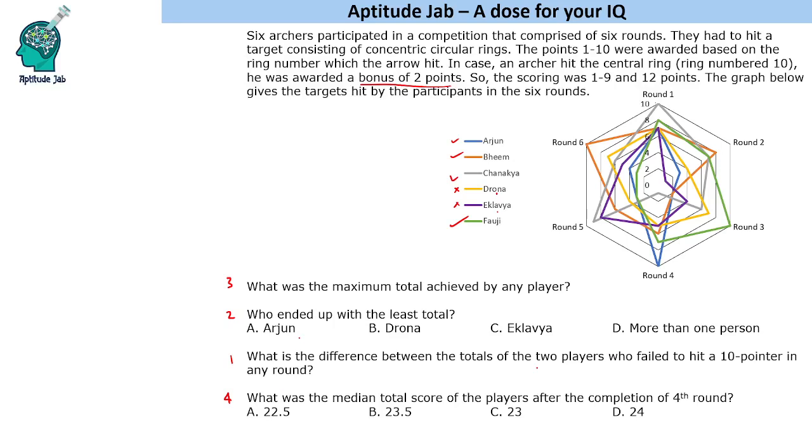So what is the difference between the totals of these two players? We start with Drone, that is the yellow one. Actually, how to read the graph? I will tell you. The center value is 0. The markings are 2, 4, 6, 8, 10. So this is 2, this is 4, this is 6, this is 8, this is 10. It applies in all directions. This is 2, this will be 4, this will be 6, this will be 8 and this will be 10. Let's start counting for Drone and then we will do for Eklav.